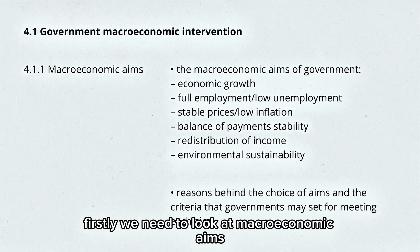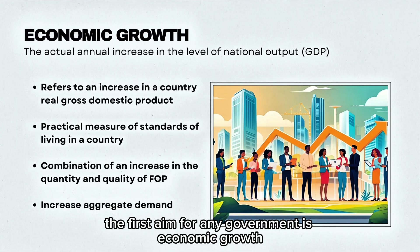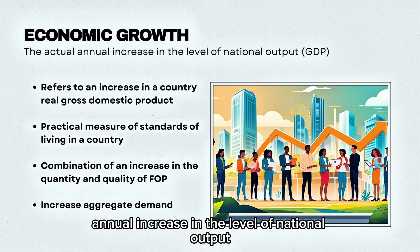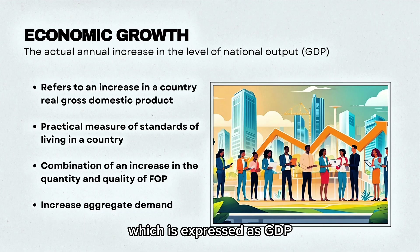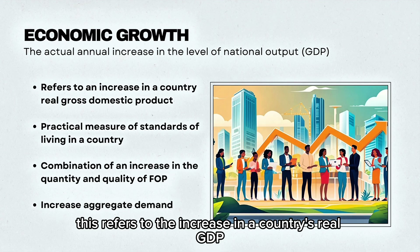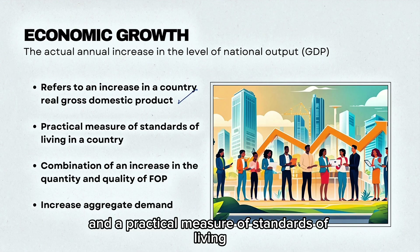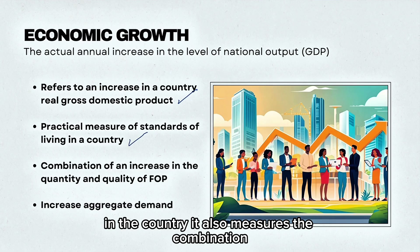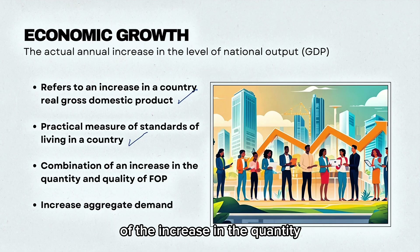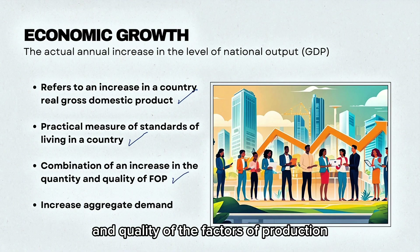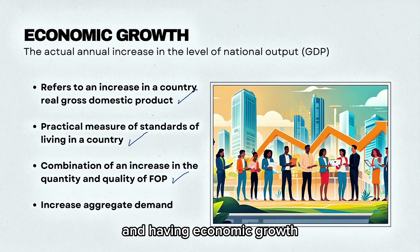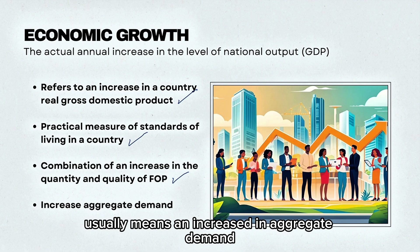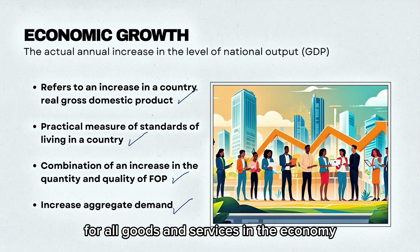Firstly we need to look at macroeconomic aims. The first aim for any government is economic growth. This is the actual annual increase in the level of national output, which is expressed as GDP — Gross Domestic Product. This refers to the increase in a country's real GDP and a practical measure of standards of living in the country. It also measures the combination of the increase in the quantity and quality of the factors of production within the economy, and having economic growth usually means an increase in aggregate demand for all goods and services in the economy.